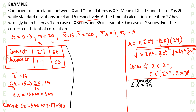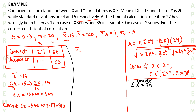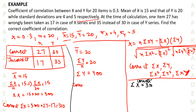Next we compute correct Σy. We know ȳ equals 20, so Σy divided by n equals 20, giving Σy equals 400. Now, correct Σy is 400 plus the correct value 30 minus the wrong value 35. So this becomes 395. We have computed correct Σy equal to 395.